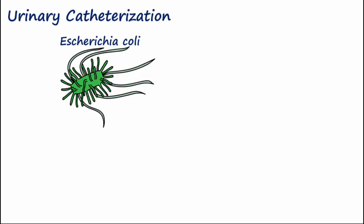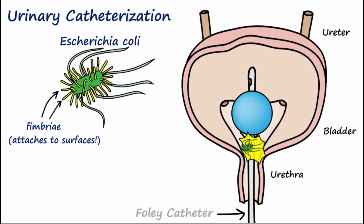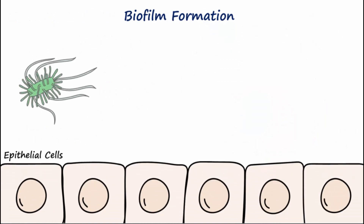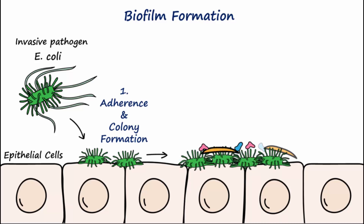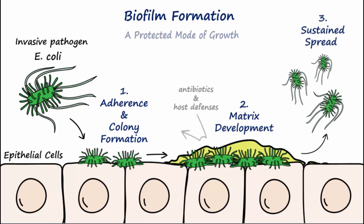Patients with urinary catheters have an increased risk of developing UTIs. E. coli or other bacteria may adhere to the surface of an indwelling catheter using their fimbria. The catheter serves as a point of entry through which E. coli gains access to the bladder. Once inside, E. coli adheres to the surfaces of epithelial cells lining the bladder wall and initiates formation of biofilms — a slimy layer made of microbial products. Biofilm formation allows the bacteria to more readily survive in the urinary tract. The extracellular matrices of biofilms provide resistance to host defenses and antibiotic treatments.